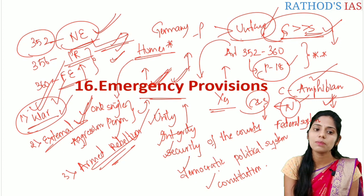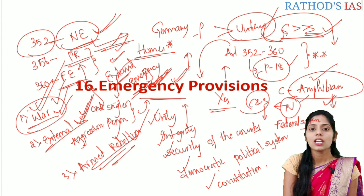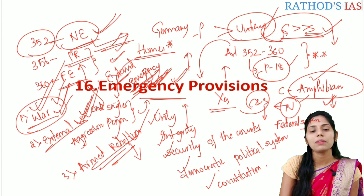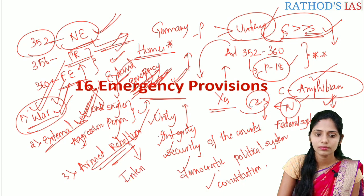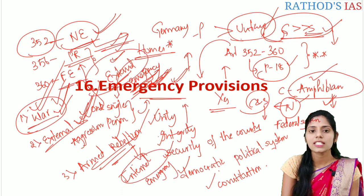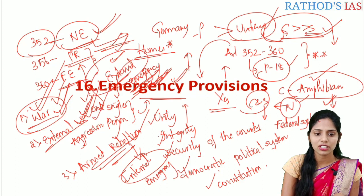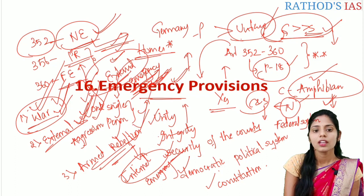Whenever national emergency is imposed on the grounds of war and external aggression, it is called external emergency. Whenever the proclamation of national emergency is on the grounds of armed rebellion, it is called internal emergency. External emergency covers war and external aggression; internal emergency covers armed rebellion.